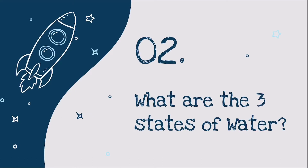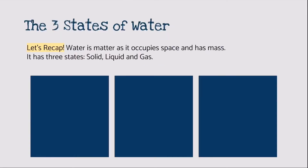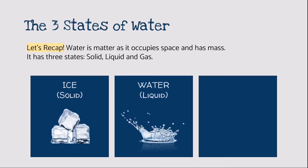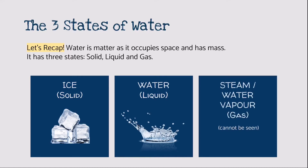Let's move on to the next guiding question: What are the three states of water? Water is matter as it occupies space and has mass. Water has three states: solid, which exists as ice; liquid, which is water; and gas, which is water vapour or steam.